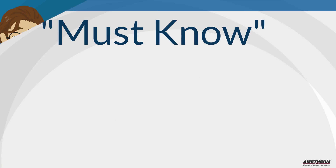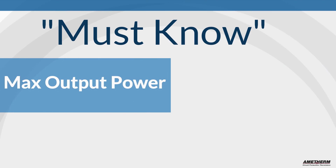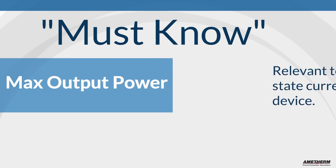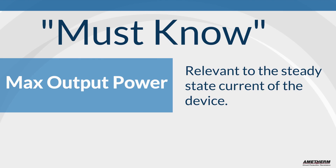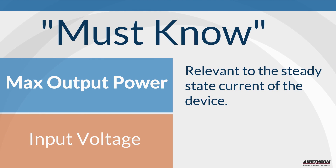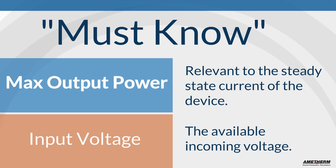To calculate inrush current there are two things that you must know. First, maximum output power — this is a variable relevant to the steady state current of the device. Second, the input voltage — this is the available incoming line voltage, for example 110 or 230 volts.